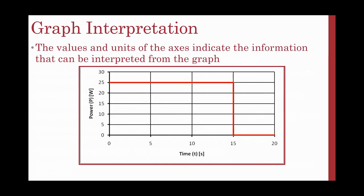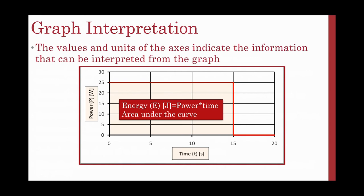The value and units of the axes indicate the information that can be interpreted from the graph. Here I have a graph of power versus time. If I multiply my watts times seconds — which is my area under the curve — I can get energy. So my energy is power times time, which is the area under my curve.